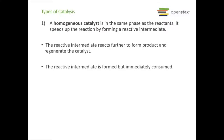Let's talk about the types of catalysts. The first type is a homogeneous catalyst, which is in the same phase as the reactants. It speeds up the reaction by forming a reactive intermediate. That intermediate then continues to react further to form the target product and regenerate the catalyst. This reactive intermediate is formed but immediately consumed, so you don't really see it — you might see a color change in the catalyzed reaction related to the catalyst forming intermediates and then regenerating.